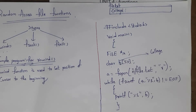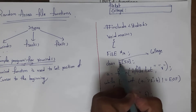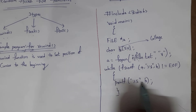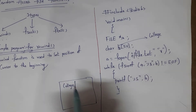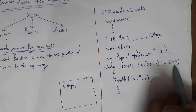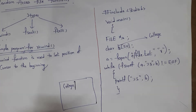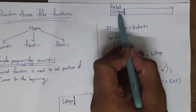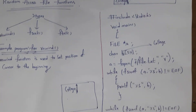Now variable B contains the information 'college'. To print this I written printf("%s", B), which will print the output as 'college'. It will print from the first character until not equal to EOF — that is, until the last character. After printing, my cursor will be at the last position.